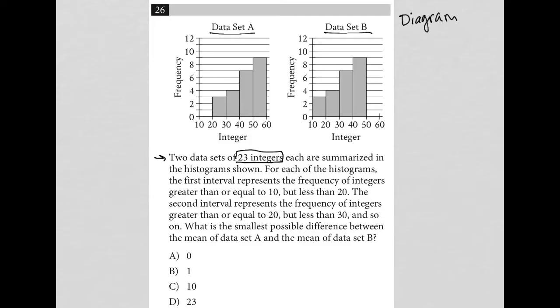Each are summarized in the histogram shown. For each of the histograms, the first interval represents the frequency of integers greater than or equal to 10, but less than 20.